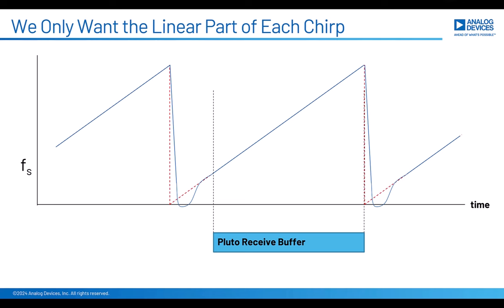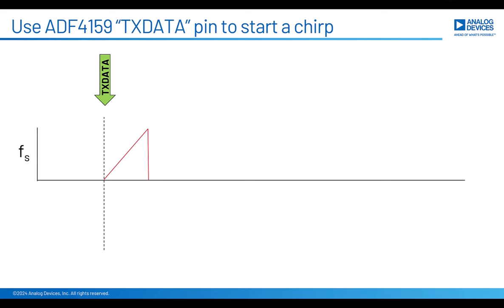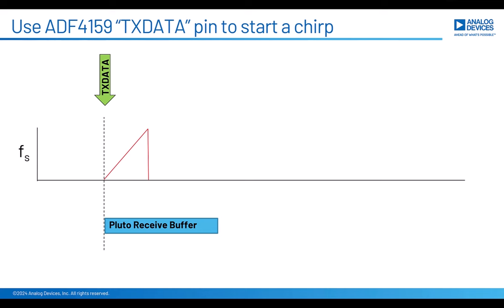So how do we do that? The ADF4159 has a special pin called TxData. When you toggle this pin, the ADF4159 will do one pre-programmed sequence. The sequence that we want it to do is one frequency chirp. That is pretty easy to do. But now we need to synchronize that TxData pin with something inside of Pluto that tells Pluto to start your receive buffer. If we can do that, then we'll get one receive buffer and know that the chirp began at the very start of that receive buffer. Then we can parse out that data for just the linear portion of that ramp.